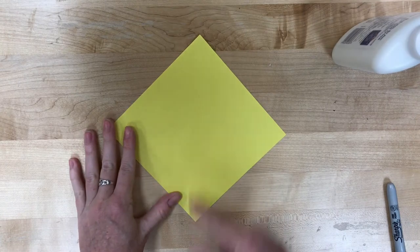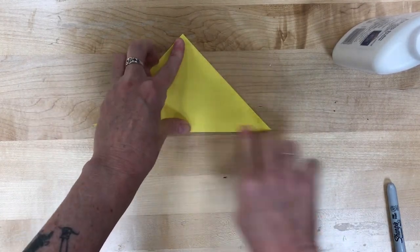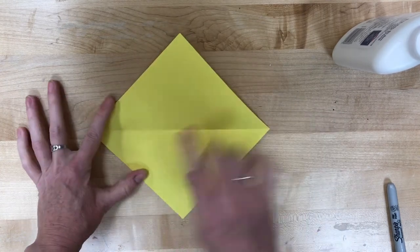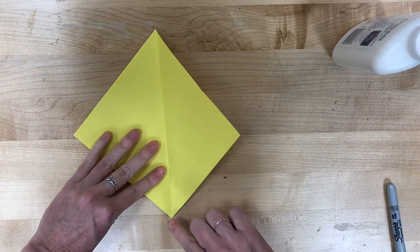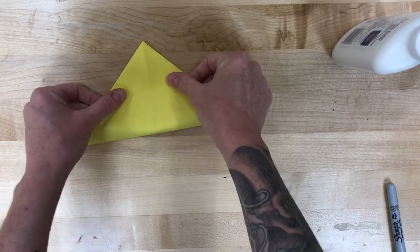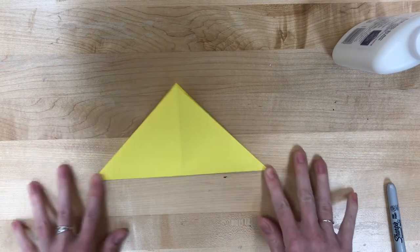We're gonna start with our paper in a diamond shape and bring that bottom point up to the top point, get a nice sharp crease. Open it up, you're gonna see that center line. We're gonna do the same thing again, bottom point up to top point, so there are lines going from each corner.